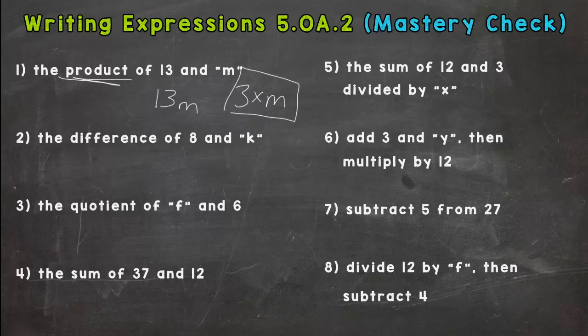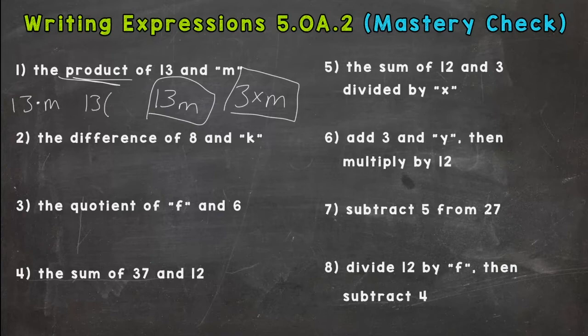But remember, letter next to a number means multiplication. You can use a dot—make sure it doesn't look like a decimal though. You can use parentheses, a number next to parentheses means multiplication, or you can use an asterisk. So those are our different ways of showing multiplication.